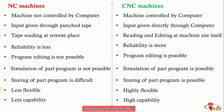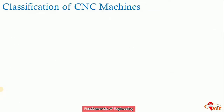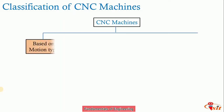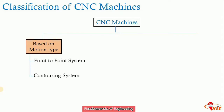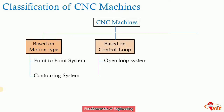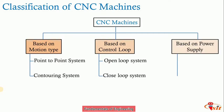Now we focus on CNC machines and their classification. First, they are classified based on motion type: point-to-point control system and contouring system (continuous path). Second, based on the control loop: open loop system and closed loop system, where feedback devices are used. Third, based on power supply: hydraulic, pneumatic, and electrical. Also, they can be classified based on axis: two-axis, three-axis, or higher-axis CNC machines.